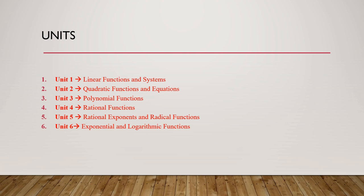In Unit 5, we are going to talk about rational exponents and radical functions. Rational exponents means we have a term raised to a number that can be a fraction, and we are going to connect rational exponents with radical functions. We will also learn the properties of exponents — how to add, subtract, multiply them, and how to simplify an algebraic expression that has rational exponents. For radical functions, we will learn how to graph them, their main types, and the domain and range of each type.